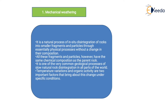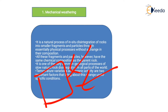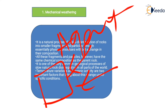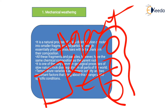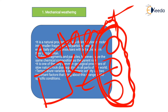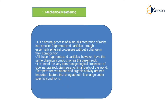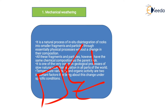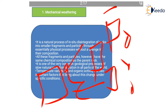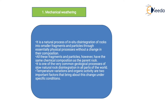Mechanical weathering is a natural process in which the parent rock breaks due to the impact of different agents like wind or water, and forms different sediments or breaking fragments. These fragments have a composition similar to the parent rock. This type of weathering is called mechanical weathering — it is a natural process of in-situ disintegration, meaning breaking of rock into smaller fragments and particles through essentially physical processes, without any change in their composition.